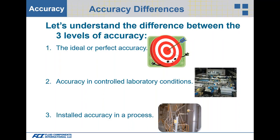That ideal accuracy comes from a controlled laboratory such as NIST, the National Institute of Standards and Technology. Then there's a second level of accuracy: where a flow meter is actually calibrated under controlled laboratory conditions. And then level three is installed accuracy in a process, which is definitely not typically an ideal or controlled laboratory condition.